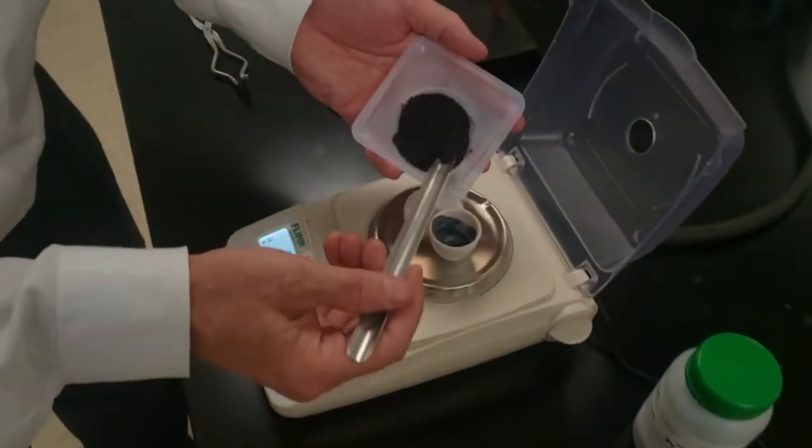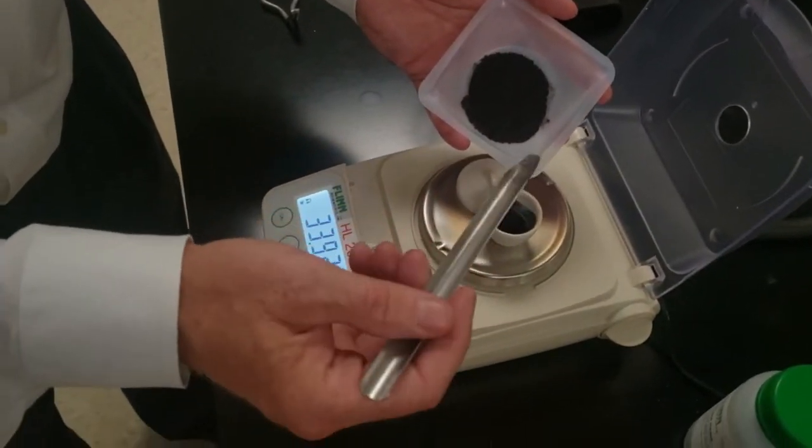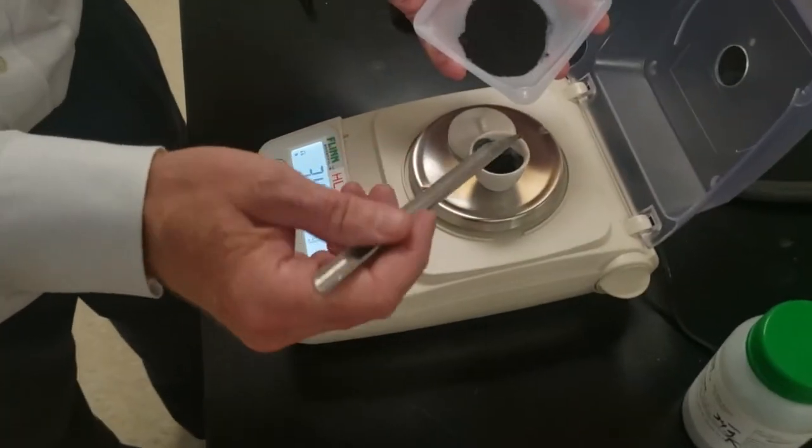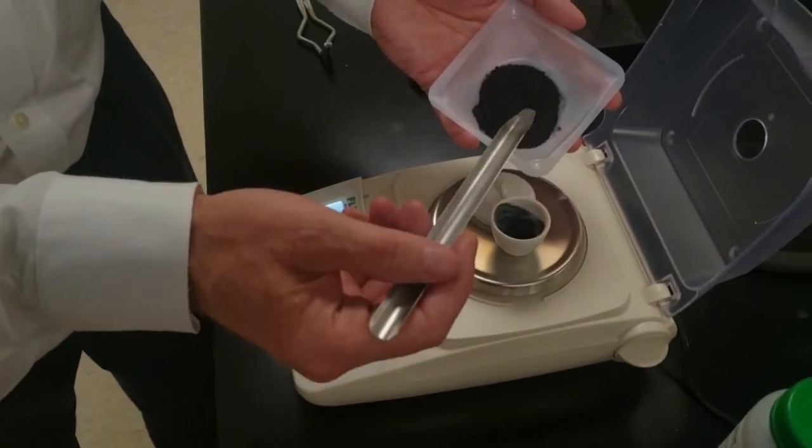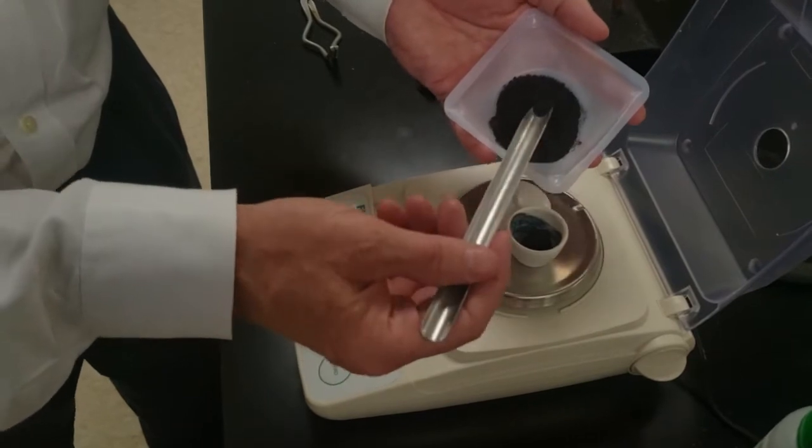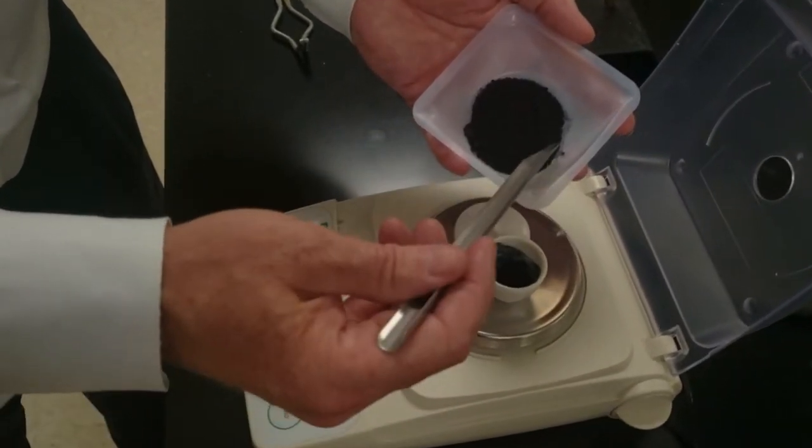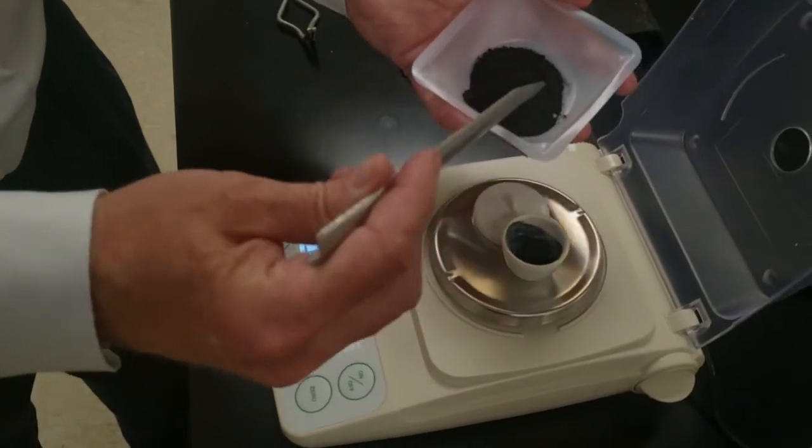Now, normally we don't like putting chemicals into containers right on the scale, but in this case we have to. We want anywhere from a half a gram to a gram. We're going to do right at a gram. So just add one to the number that was already on the scale and try to get that number, or maybe just a tiny bit above it.